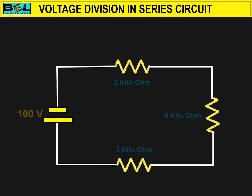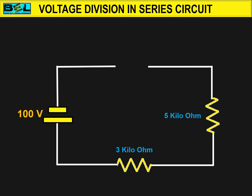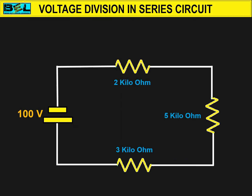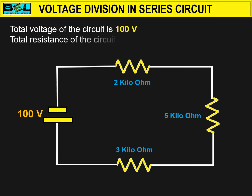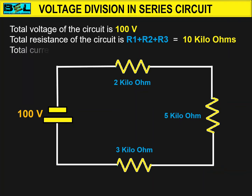There is a series circuit with a 100 volt power supply and three resistors having values of 2 Kilo ohm, 5 Kilo ohm, and 3 Kilo ohm connected in series. The total voltage of the circuit is 100 volts. The total resistance of the circuit is R1 plus R2 plus R3, which is equal to 10 Kilo ohm.